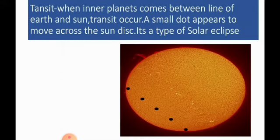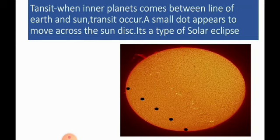Transit: When inner planets like Mercury and Venus come between the line of the earth and the sun, a transit occurs. At that time, a small dot appears to move across the sun's disk. Transit is a type of solar eclipse — when inner planets, that is Mercury or Venus, come in between the earth and the sun, this is called a transit.